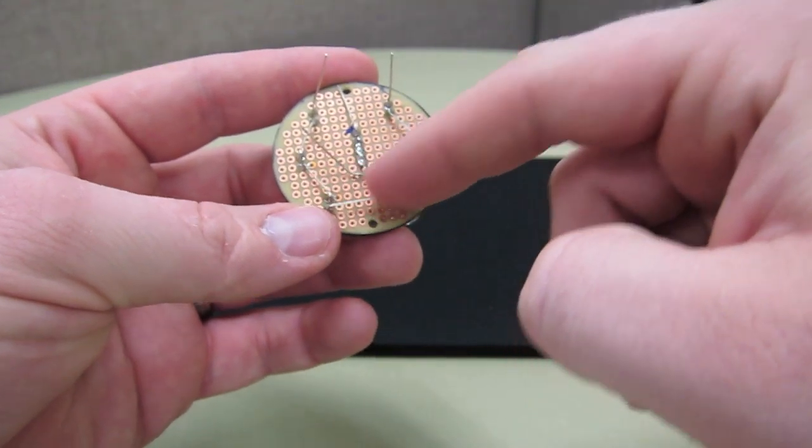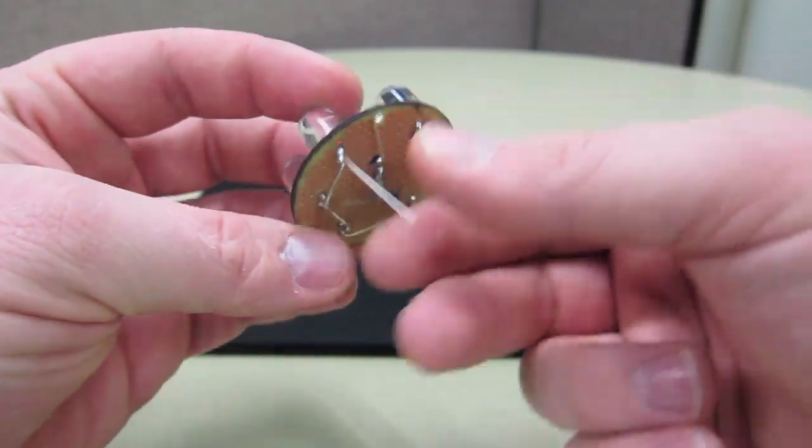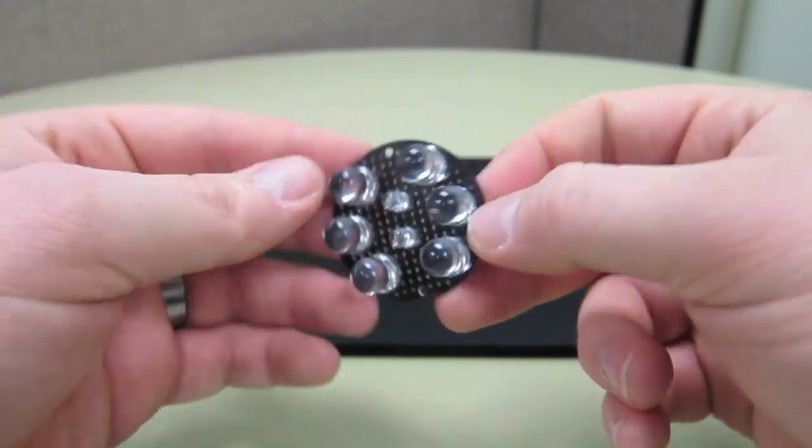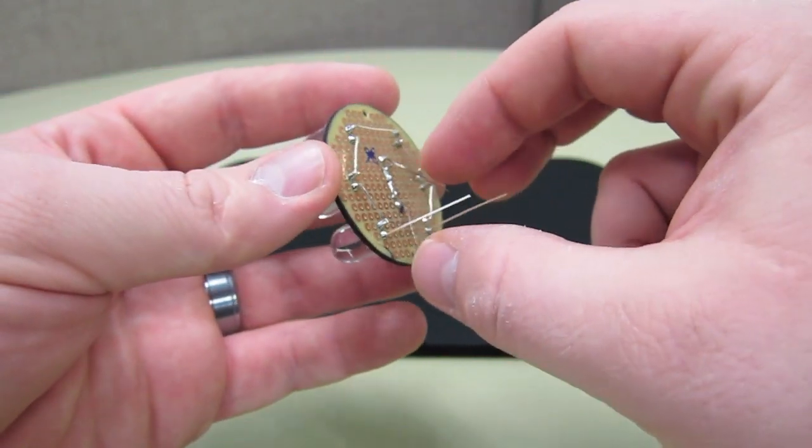Right here I just soldered them in a serial format, so we have one positive one negative, and I can even hook this up to a direct 9-volt battery without having to put a resistor because it is in serial format.